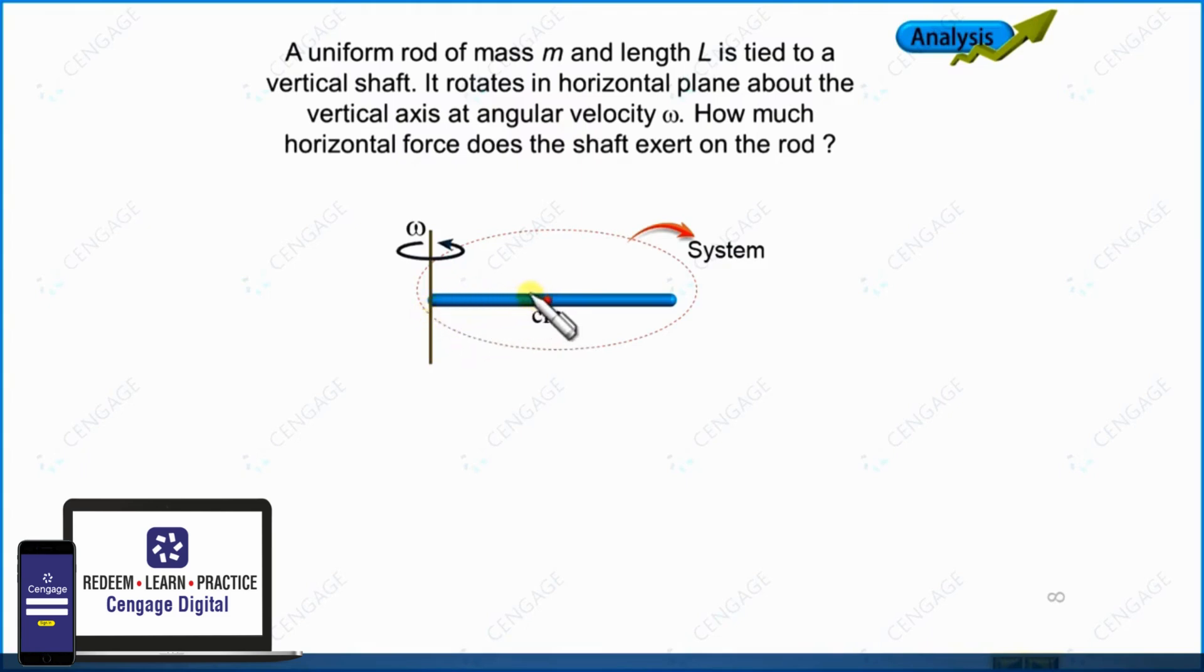That means in this situation given in the figure, the net force applied by the shaft on the rod should also be in the leftward direction. Let us make the diagram of this force. Let us consider this force as capital T.